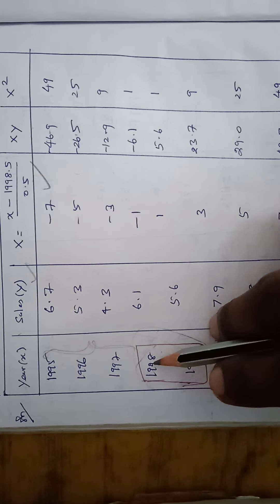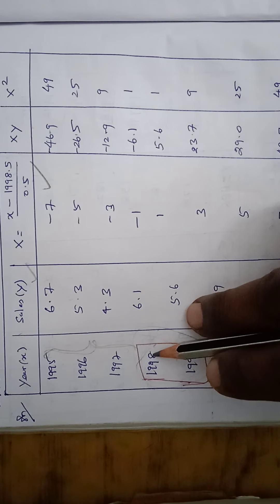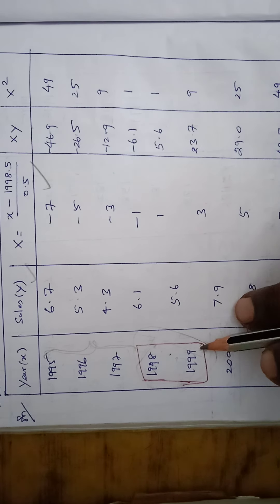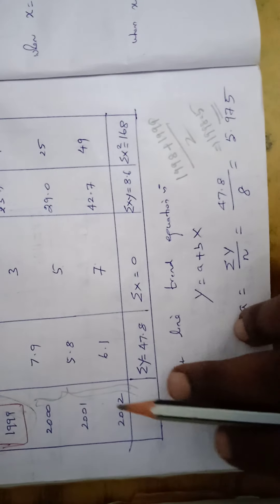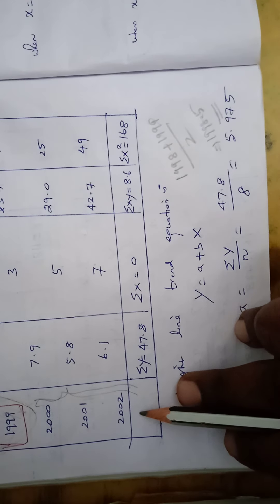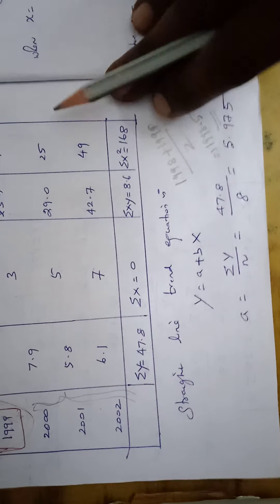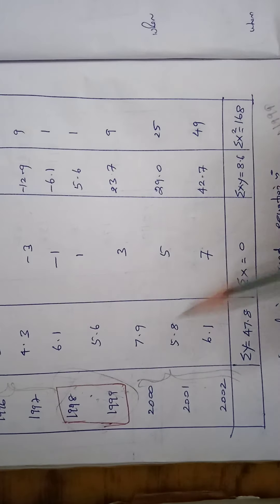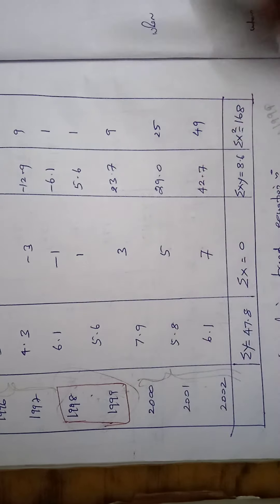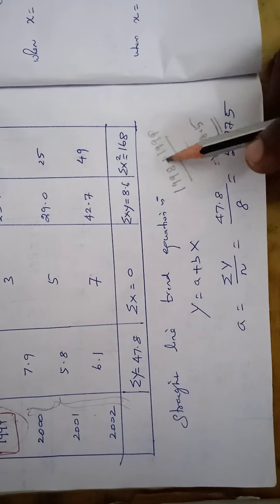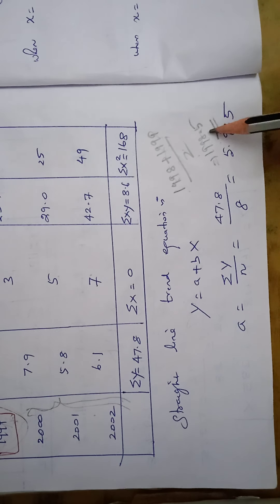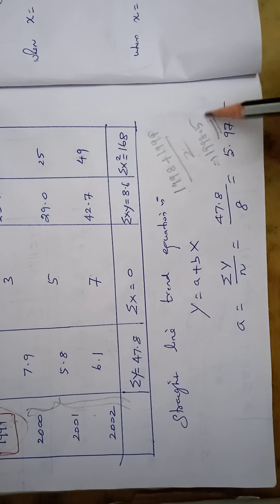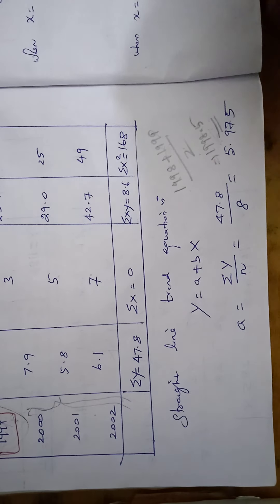So we have to consider 2 years 1998 and 1999. So suppose the given years are even means, we have to select these 2 years 1998 and 1999. Average of these 2 years 1998 plus 1999 by 2. Average of these 2 years is 1998.5. This is the middle year.